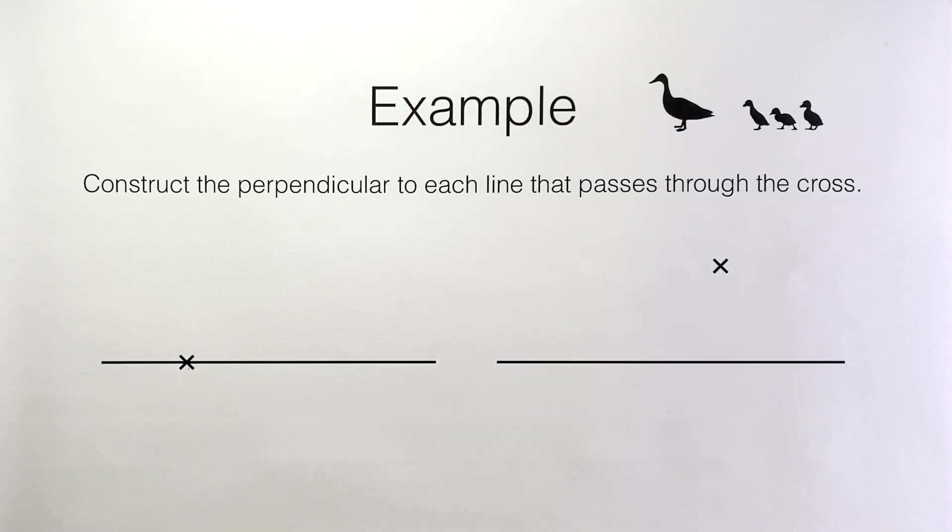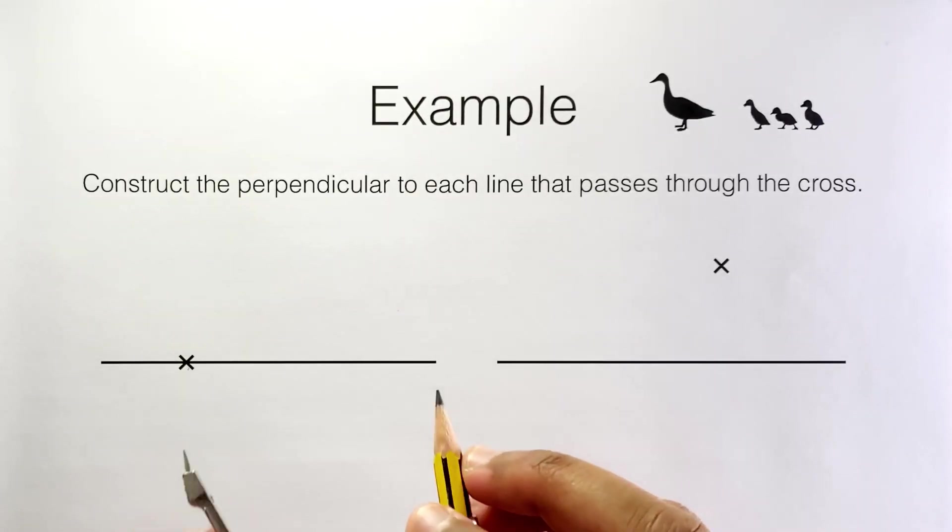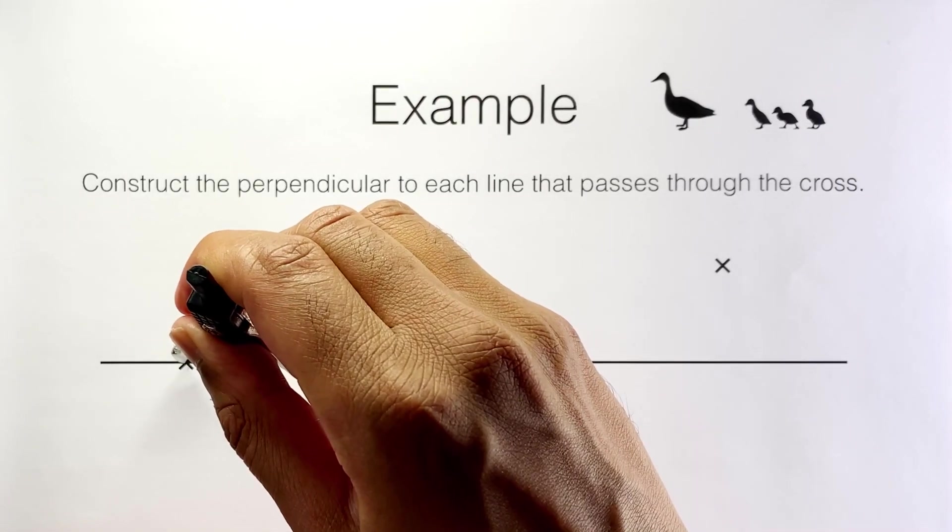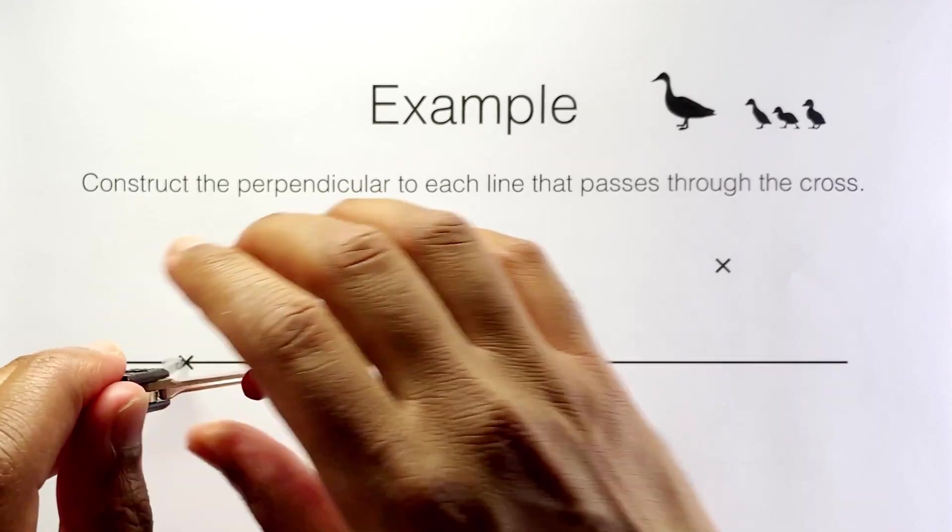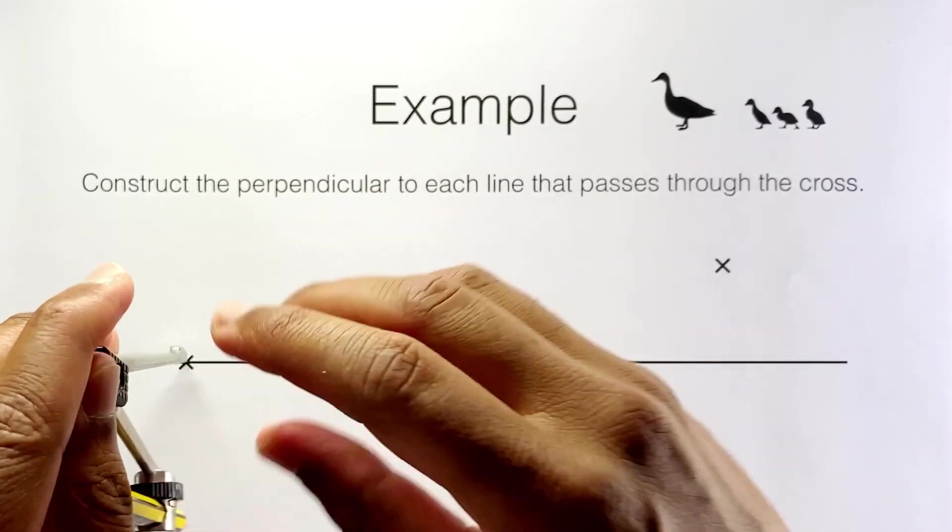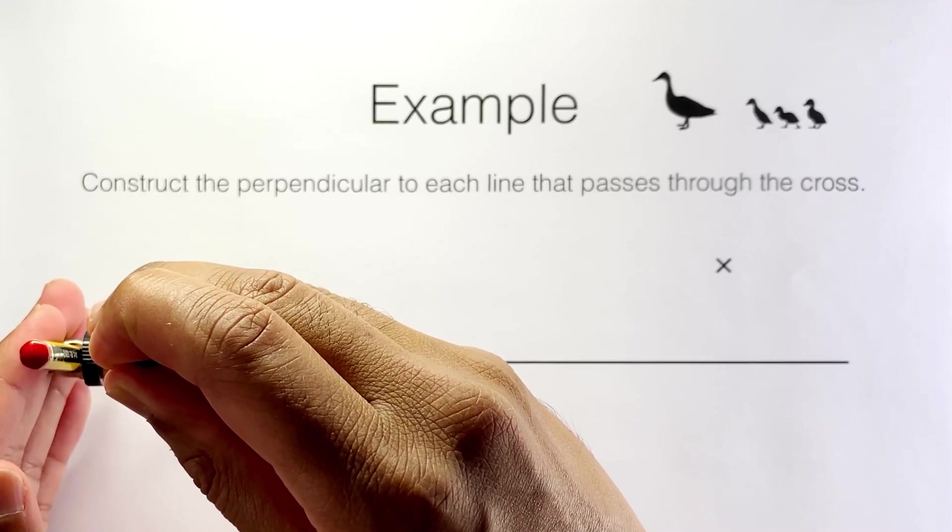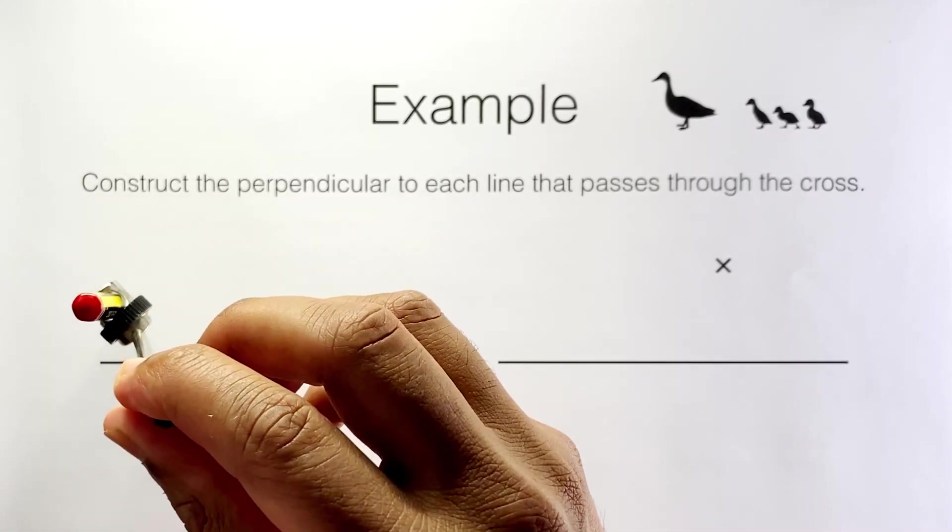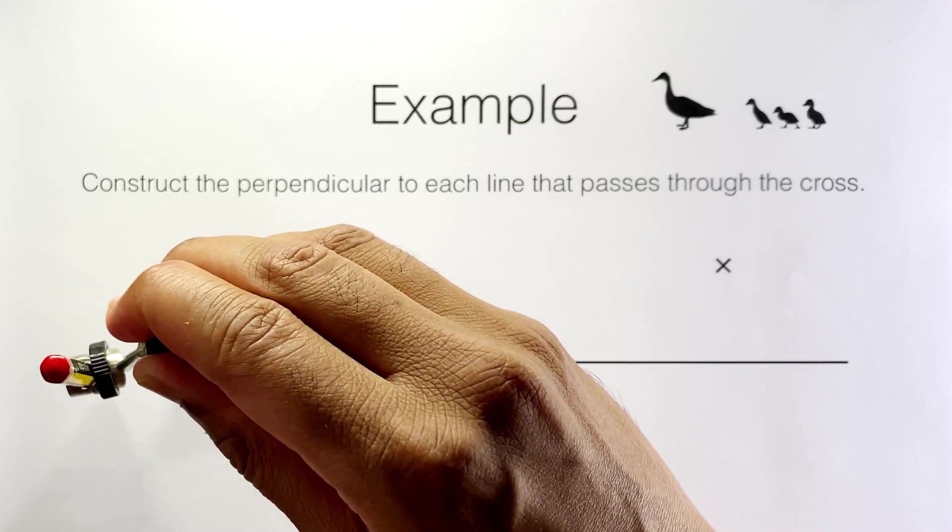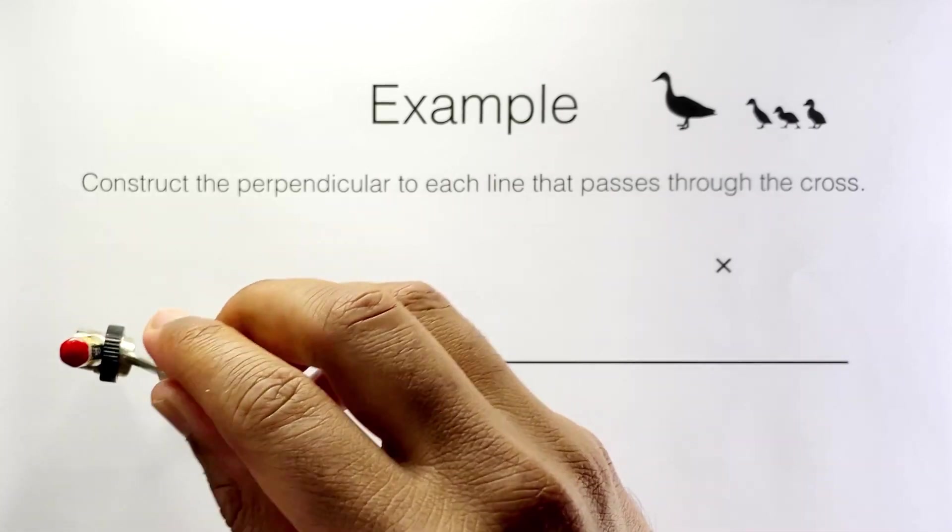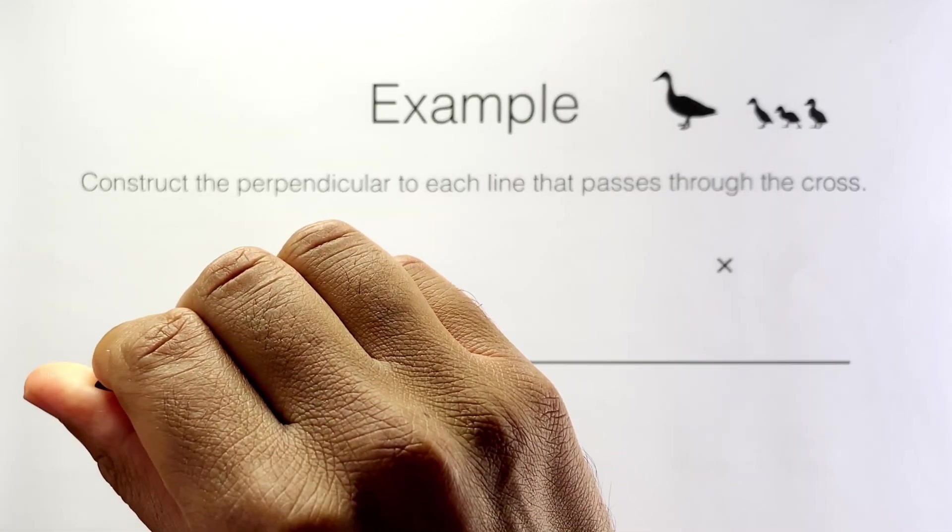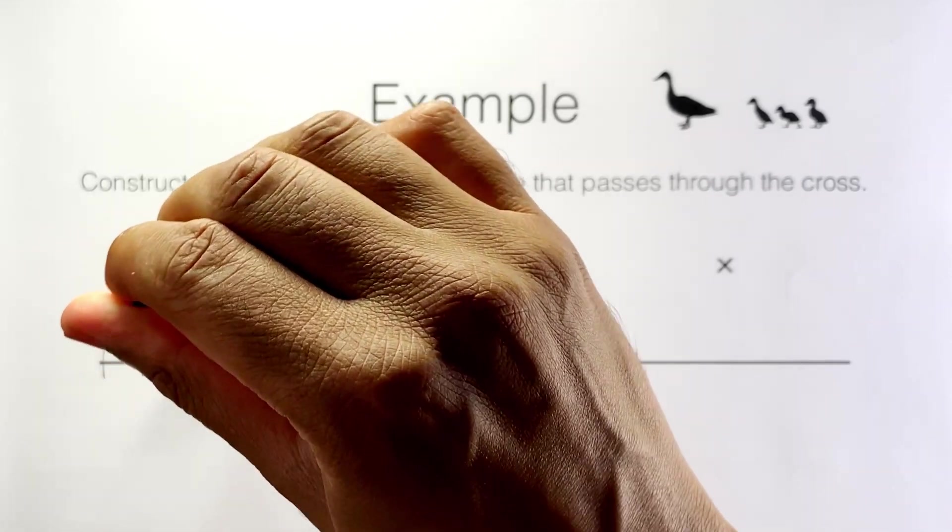I'm going to get my compasses and position the needle at the point there. I'm going to open out the compasses a little bit so that the distance is a bit less than the distance to the end point. I'm going to mark an arc here and without changing the compass length mark an arc over here.